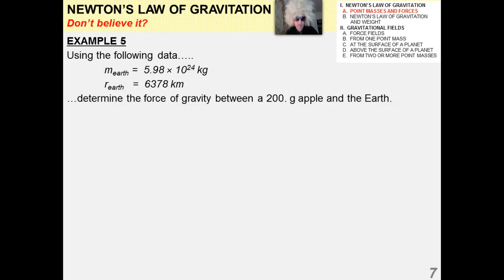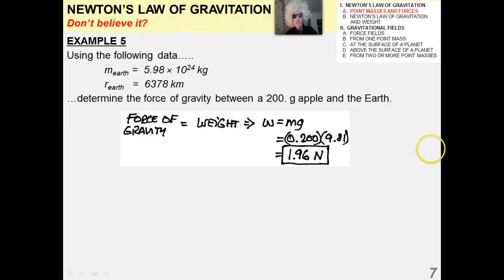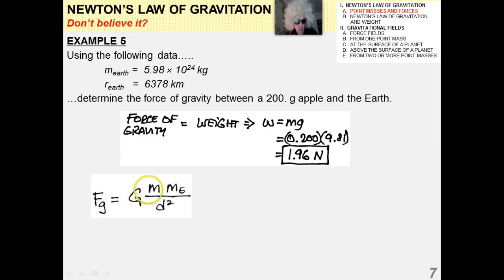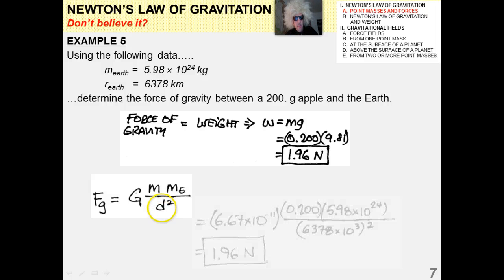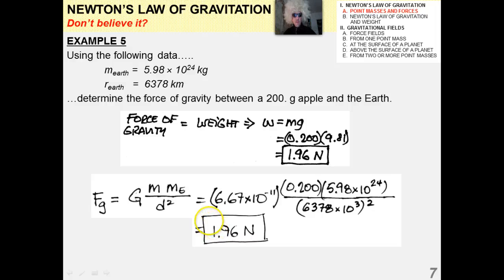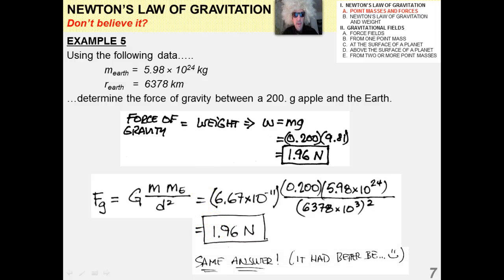Back to the 200-gram apple — determine its weight, or the force of gravity between it and the Earth. You might think W equals mg is simpler than F equals G times M1 times M2 over D squared. The force of gravity via mg gives 1.96 Newtons. Plugging in G, the mass of the apple, the mass of the Earth, and the radius of the Earth as the distance, you also get 1.96 Newtons — exactly the same thing. This works like everything else in physics.